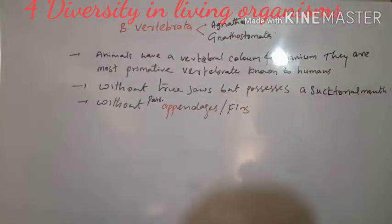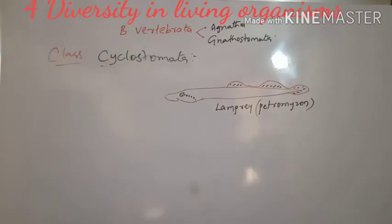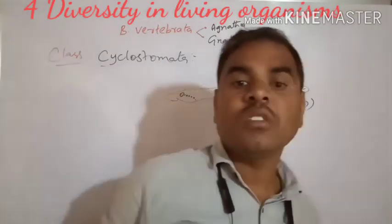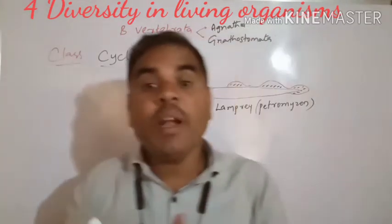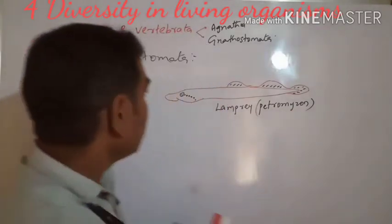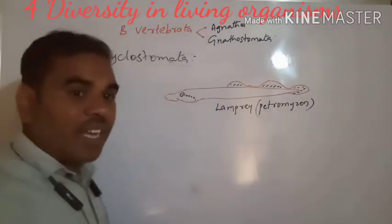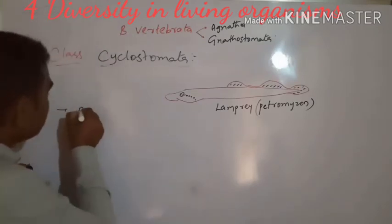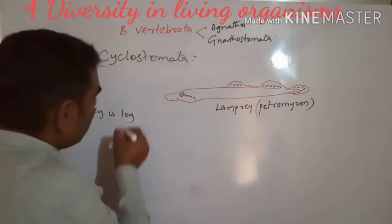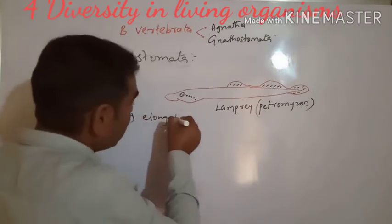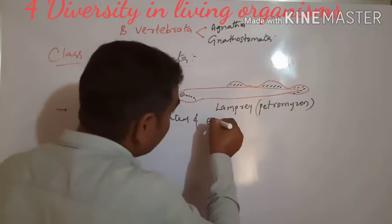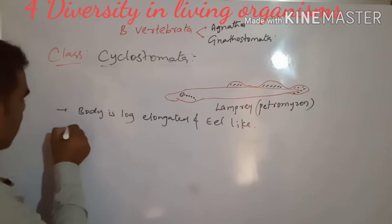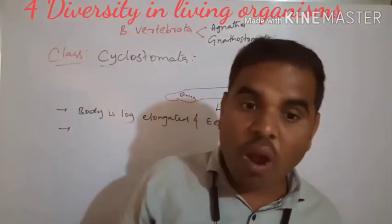The class is Cyclostomata. 'Cyclos' means circle and 'stomata' means mouth — so a circular mouth is present. The body is long, elongated, and eel-like. The skin is soft, slimy, and smooth.